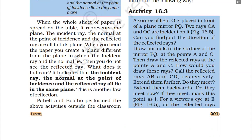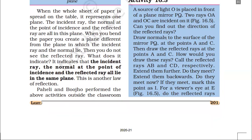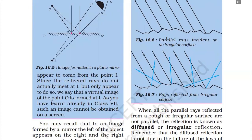Then draw the reflected rays at points A and C — call them AB and CD respectively. Extend these reflected rays further. Do they meet? Extend them backwards — if they meet, mark that point as I. For a viewer's eye at E, the reflected rays appear to come from point I.